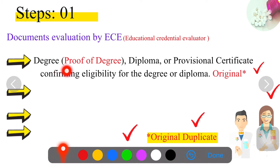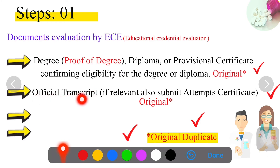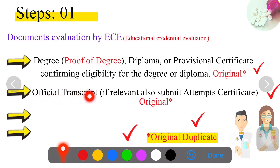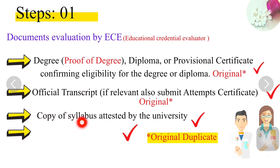Remember, don't send your original degree — you only need to send this proof of degree. The second document is your official transcript. Go to your university and ask them for a duplicate copy of your original transcript. Your university will charge a very nominal fee and provide the duplicate copy in one or two working days. You don't need to send your original personal transcript — only the duplicate copy of your official transcript.